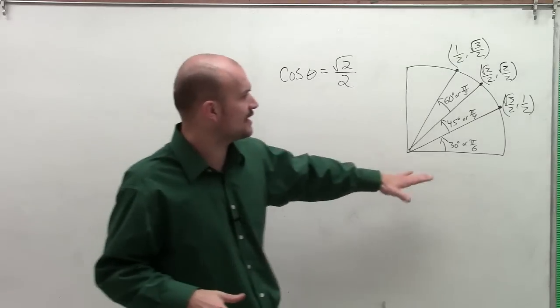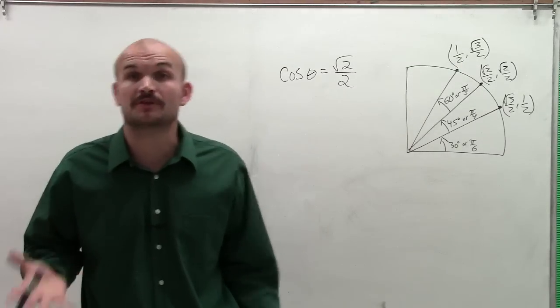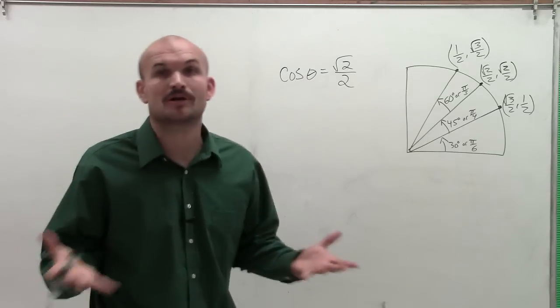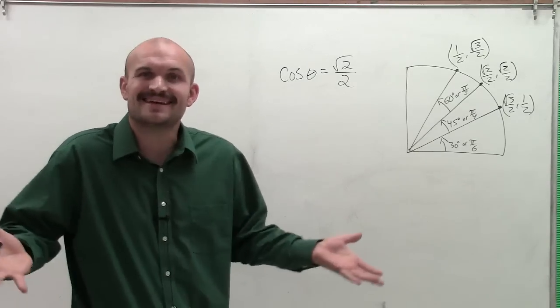So what I did is I just kind of constructed what the first quadrant of the unit circle is going to look like. And then we can understand what cosine is, and we can make the match and get our answer.